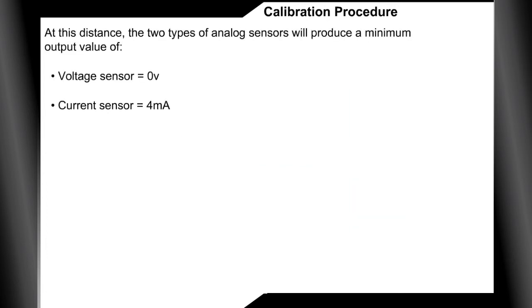At this distance, the voltage sensor will produce a minimum output value of 0 volts, and the current sensor will produce a minimum output value of 4 milliamps.